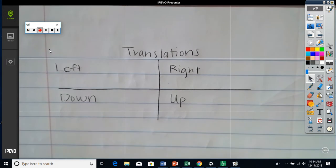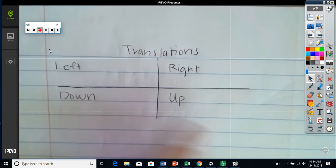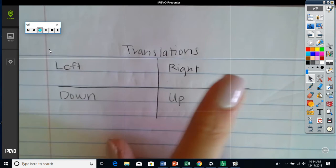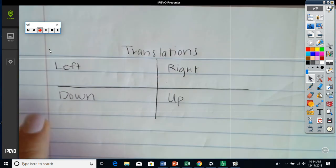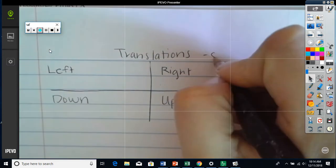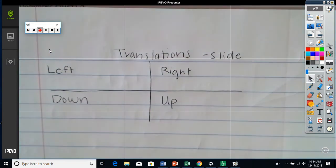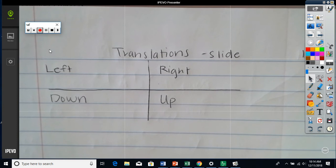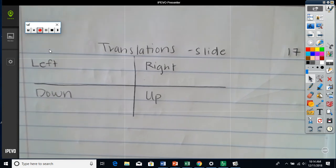Alright, so we're doing translations. There are four types of translations. We can move to the left, to the right, up, or down. Remember, translation means you slide it. Make sure you copy these notes in your journal on page 17 or the next blank page.